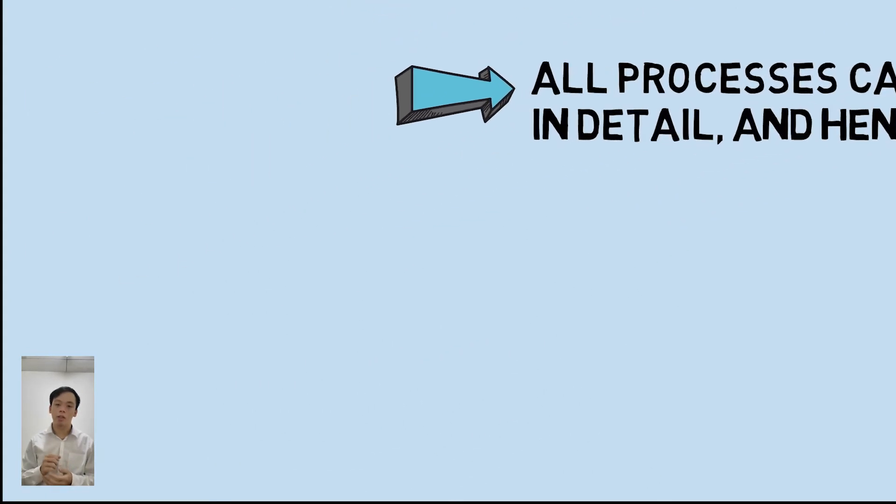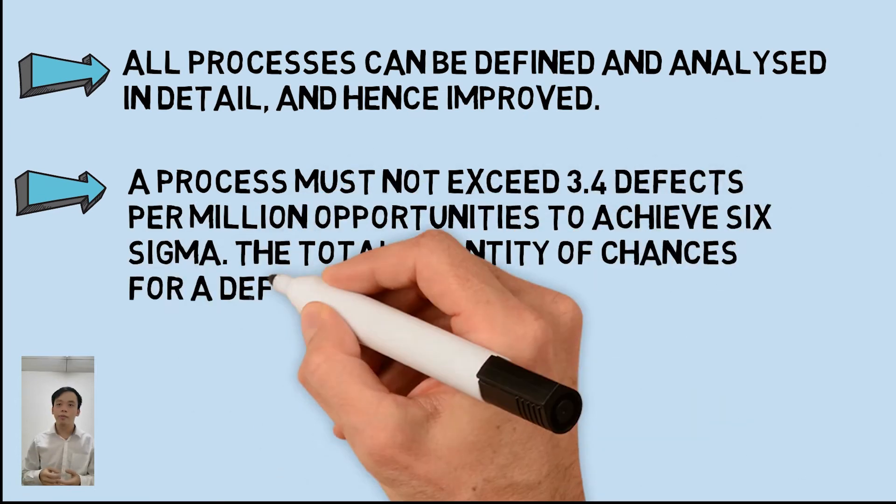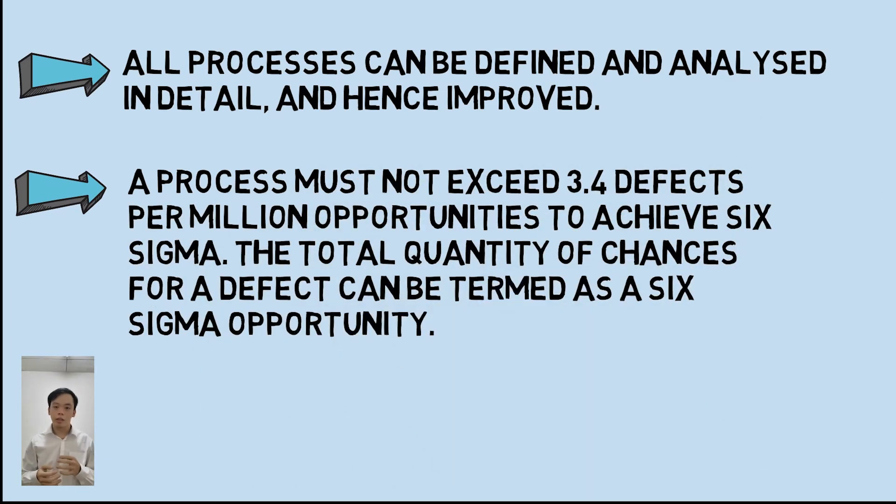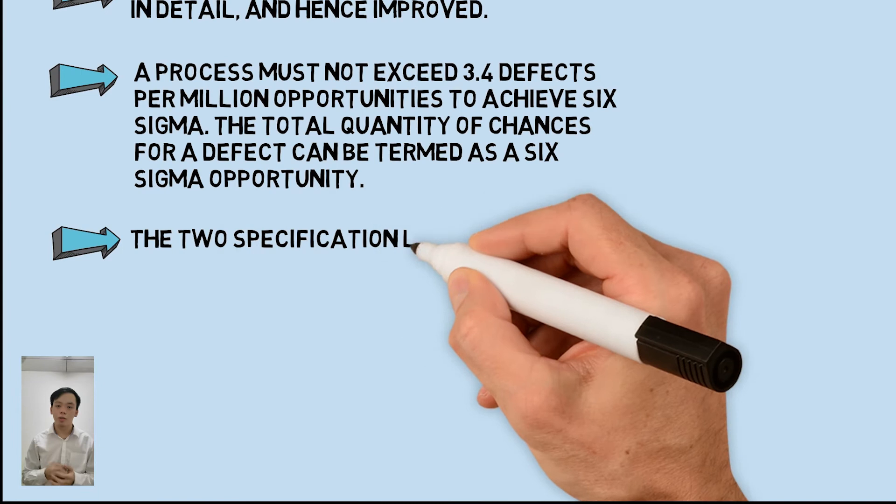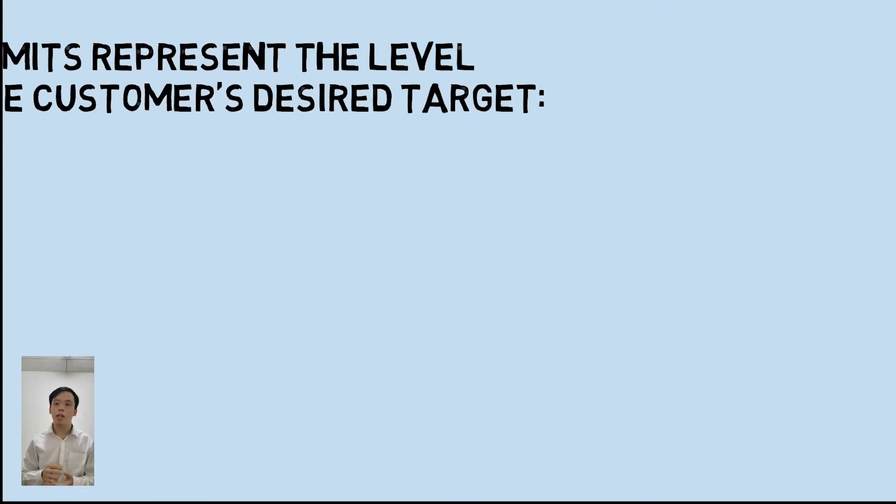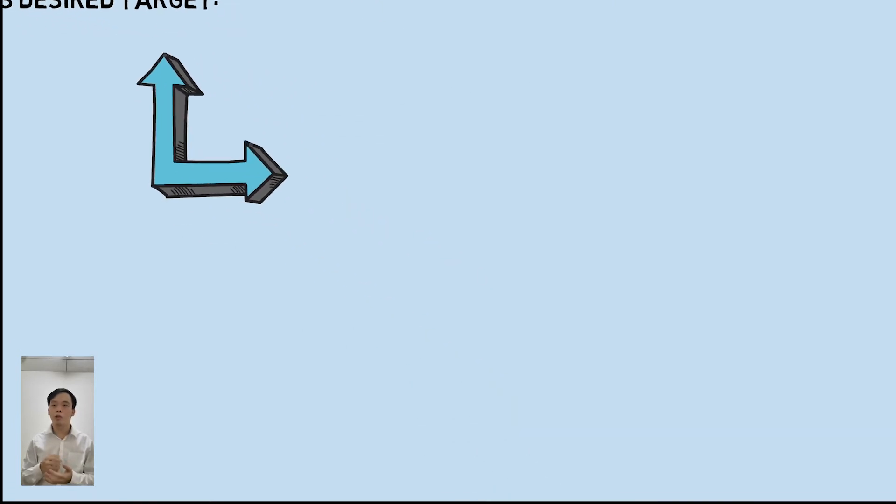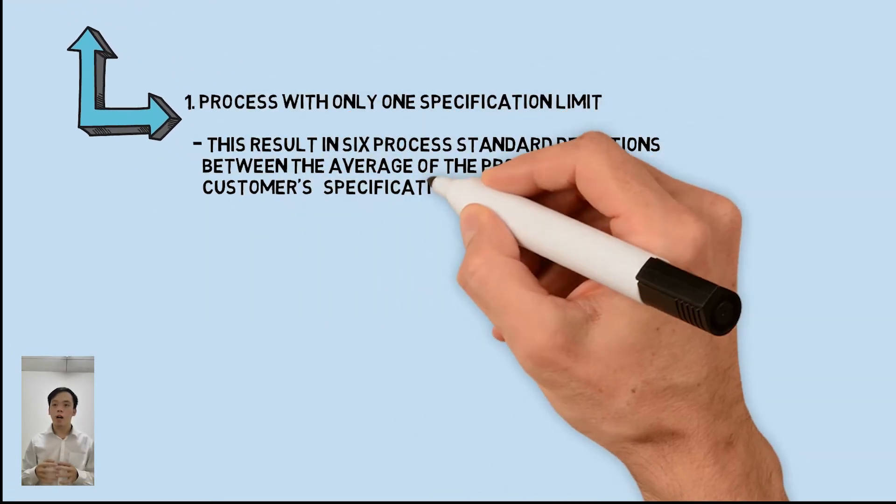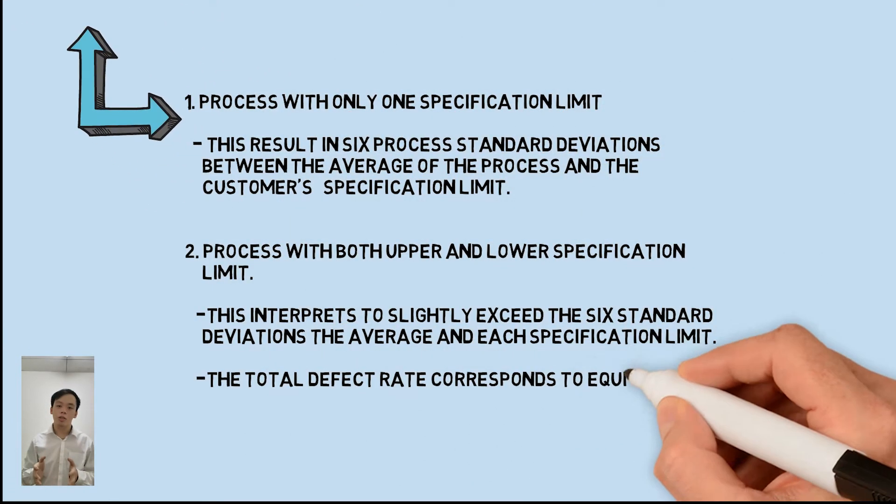There are limits to Six Sigma. The first limit is processes with only one specification limit. The second is processes with both upper and lower specification limits.